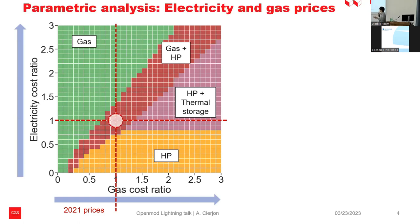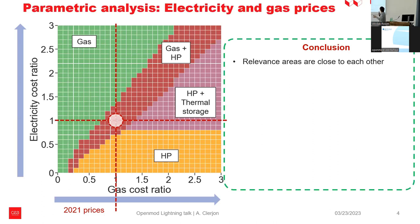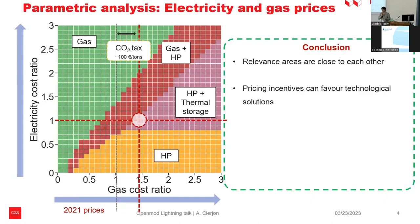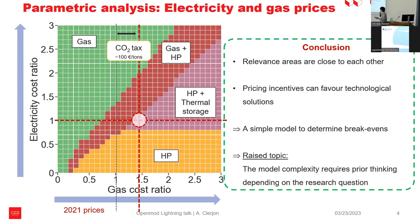Before the Ukrainian crisis, the costs were here. What's very interesting is to see that we managed to determine the relevance area of the use of technologies, and it also enabled us to determine what the effect of some financial incentives would be. For instance, with a CO2 tax of 100 euro per ton, we would move from using electricity and gas to only electricity and thermal storage. With quite a simple model, we managed to really understand and determine trade-off break-evens between technologies.